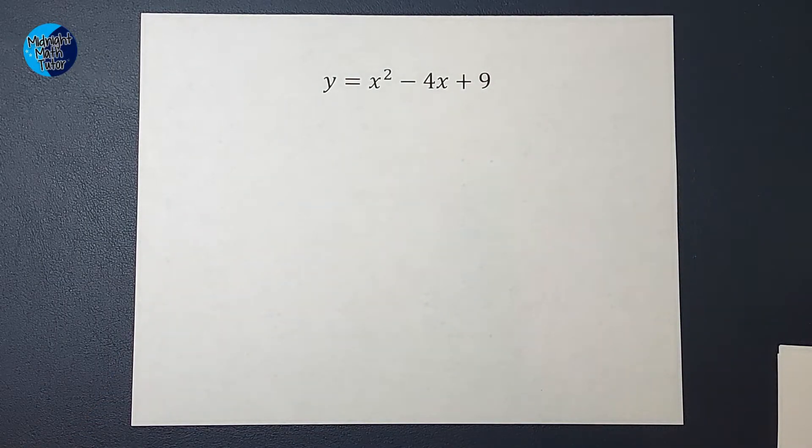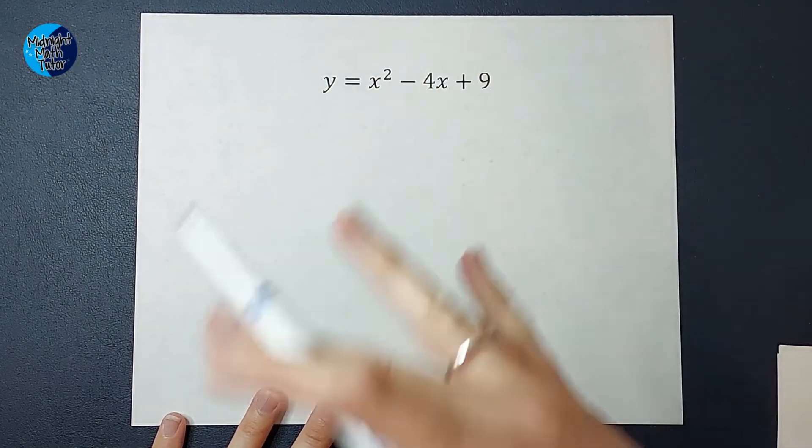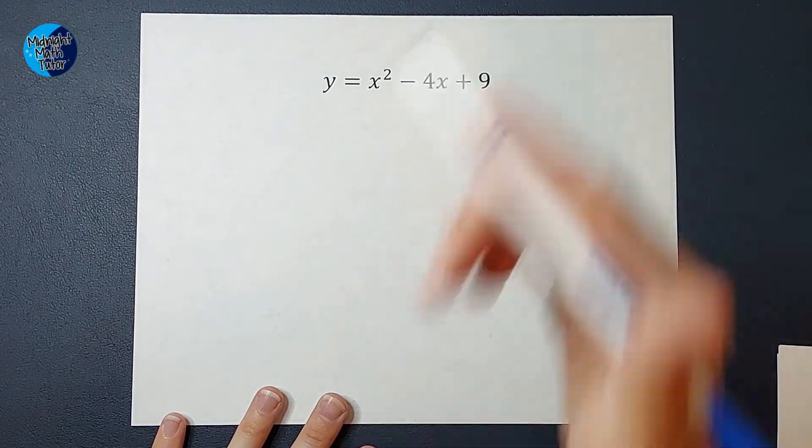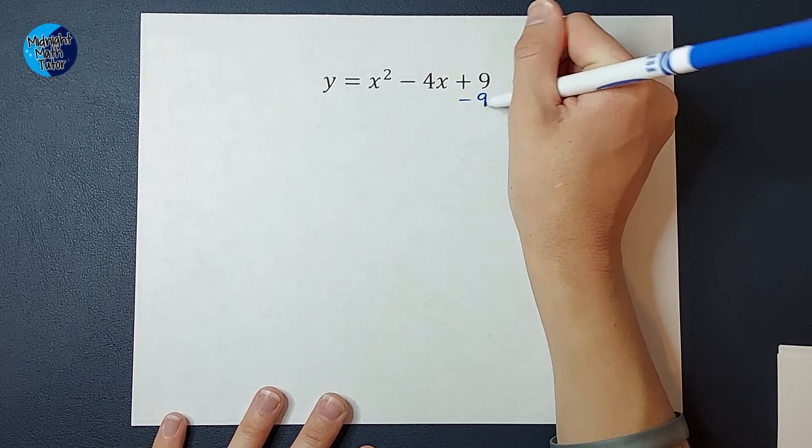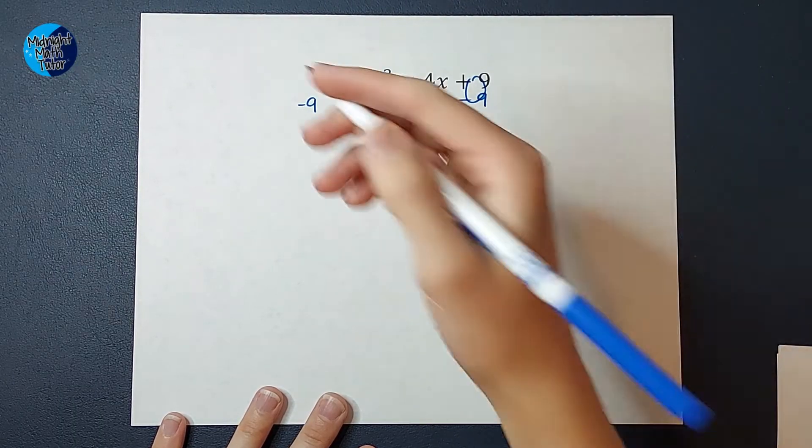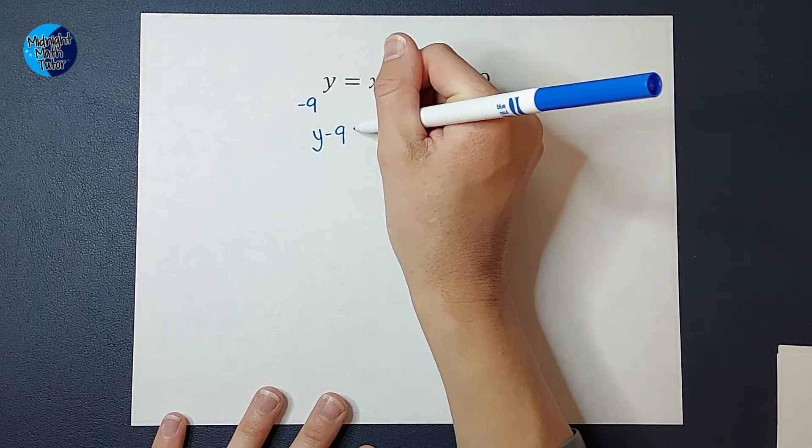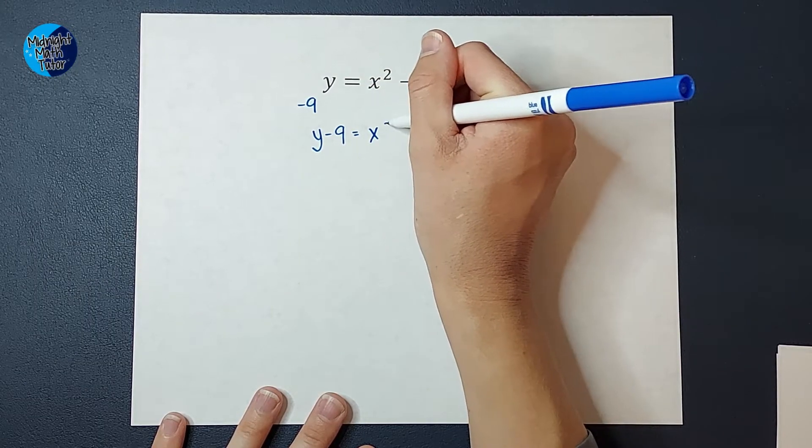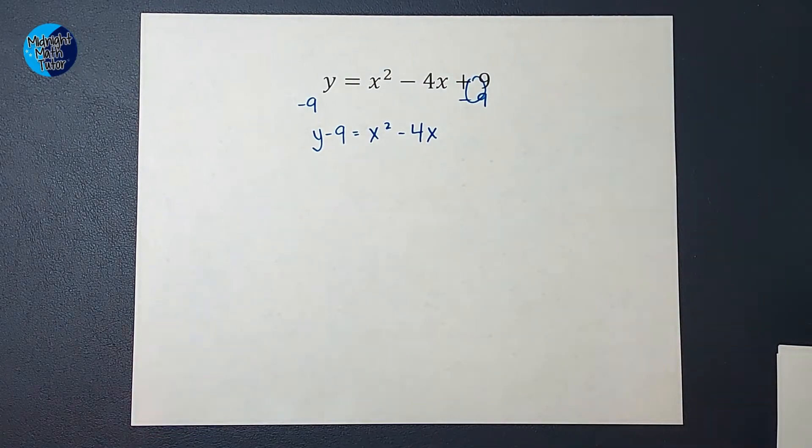But the first thing I do in completing the square is I want to get all my x's on one side with nothing else. Basically I don't want this plus 9 there, so I'm going to subtract 9 from both sides. Now once I do that, I'm going to have y - 9 = x² - 4x. All my x's are on one side.